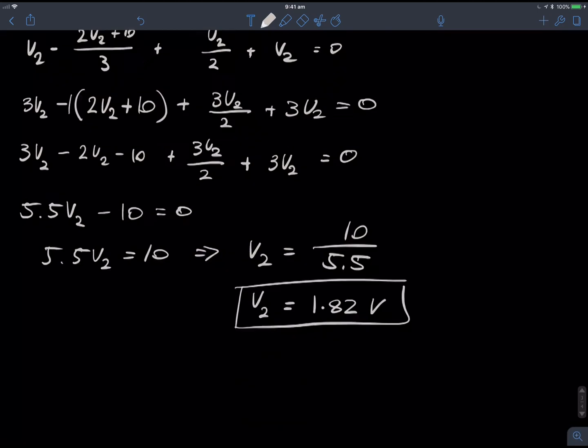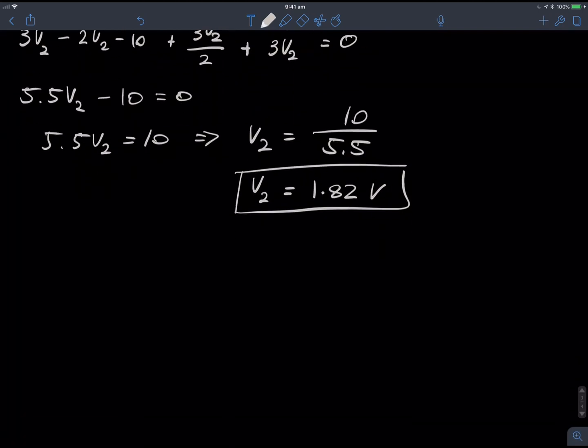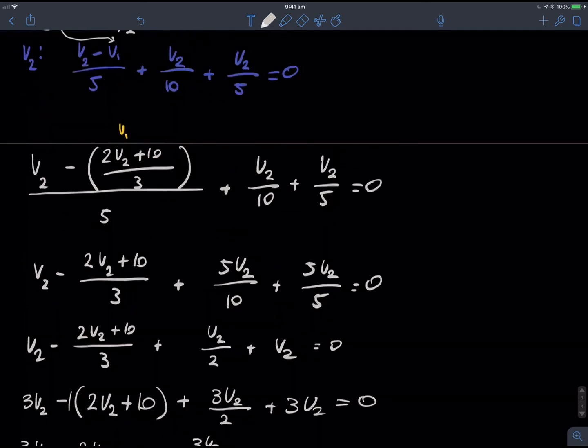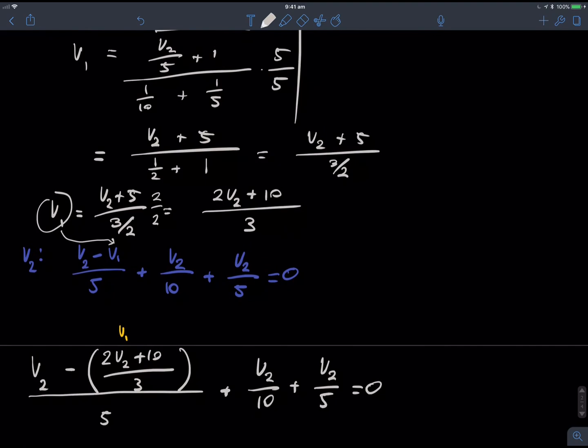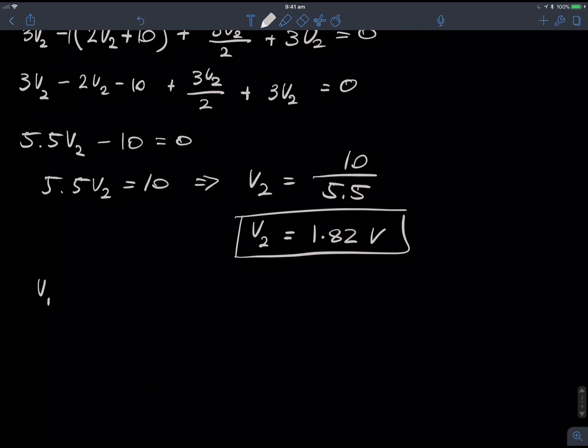So, there's our V2. And now, it's very easy to find V1, because we had an equation for V1 back up here. Right here. So, it's 2V2 plus 10 over 3.